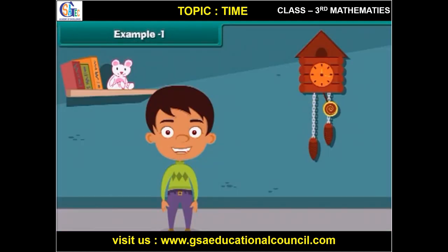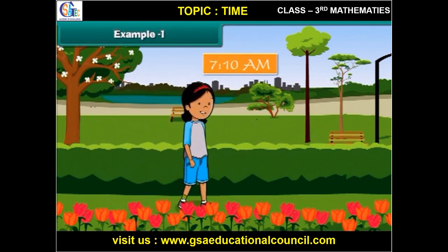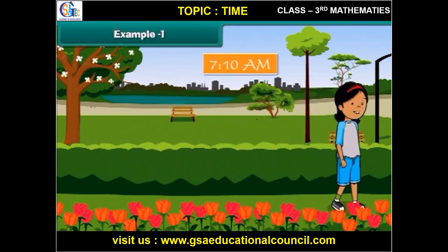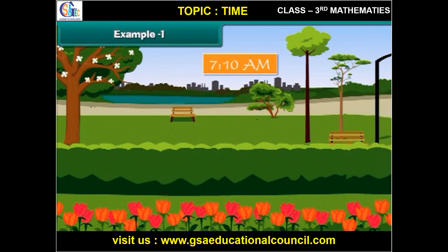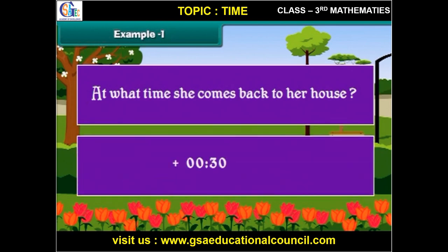Let us solve some interesting problems on time. Sarah goes for her morning walk at 7:10 AM. She walks for half an hour. At what time does she come back to her house? To find the answer, we need to add 30 minutes to 10 past 7. The time will be 7:40 AM.